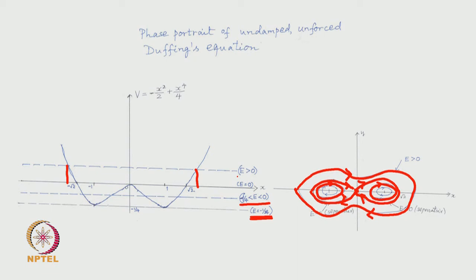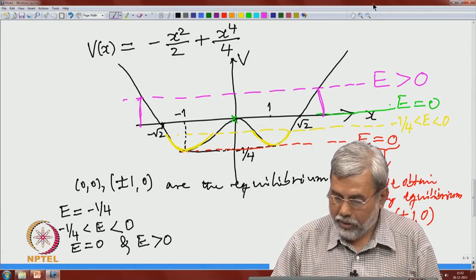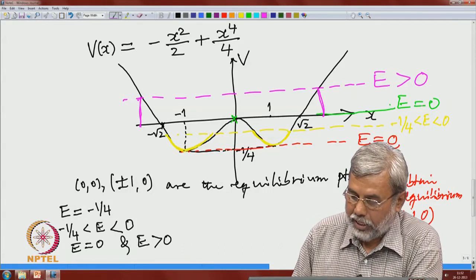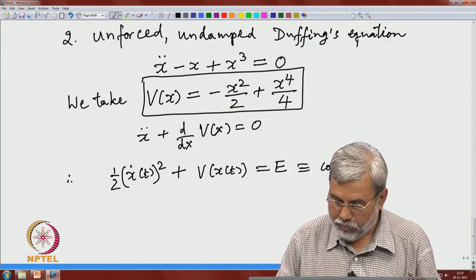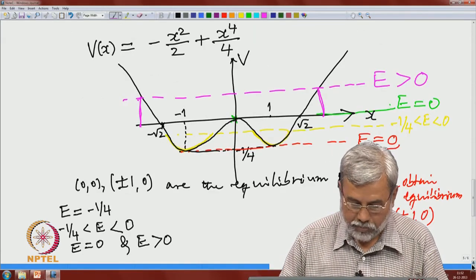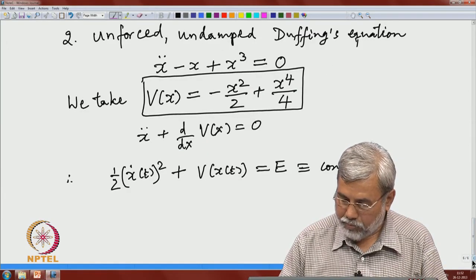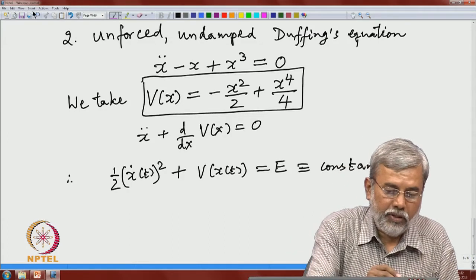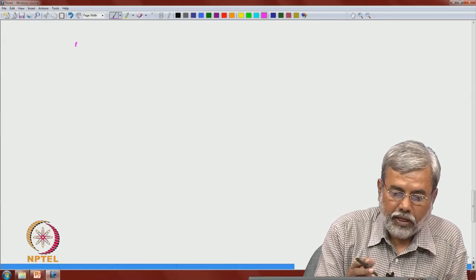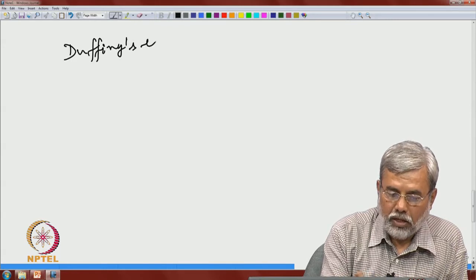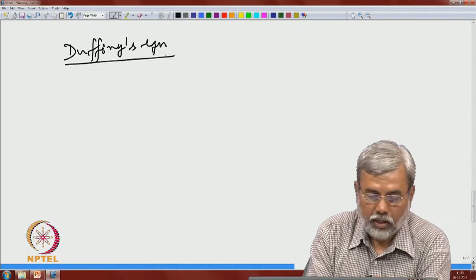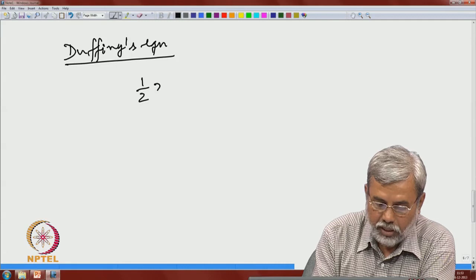Here at all energy levels we get only periodic orbits — that is a big difference from the pendulum case, where at the final level we got only unbounded solutions. Let me make a few remarks about the Duffing equation. Concentrating on energy level 0, we have the key equation: (1/2)x-dot(t)² plus minus x(t)²/2 plus x(t)⁴/4 equals 0.